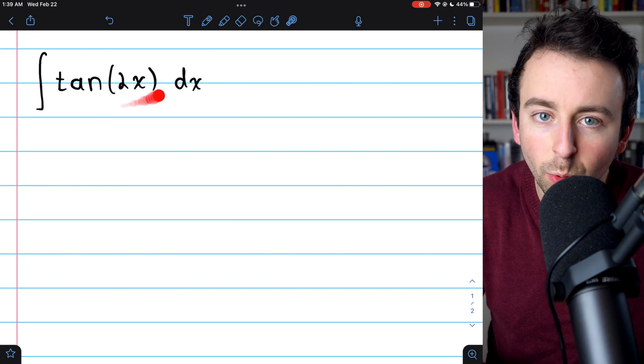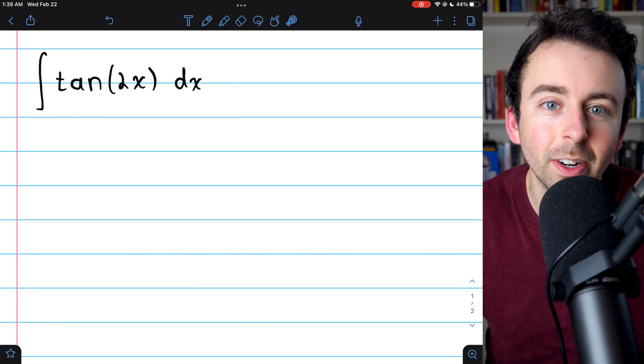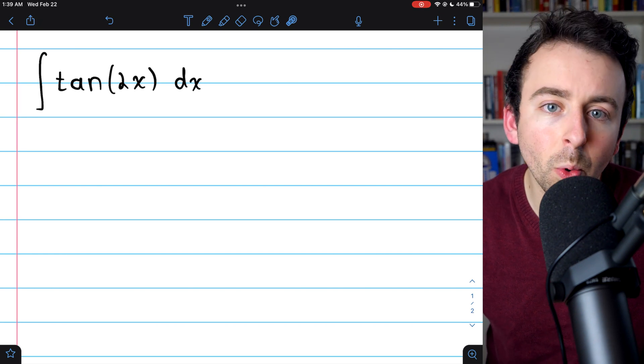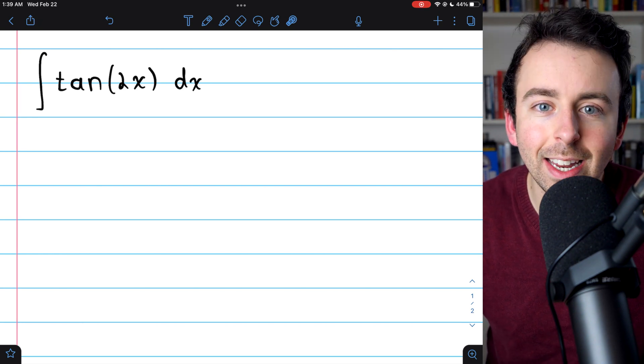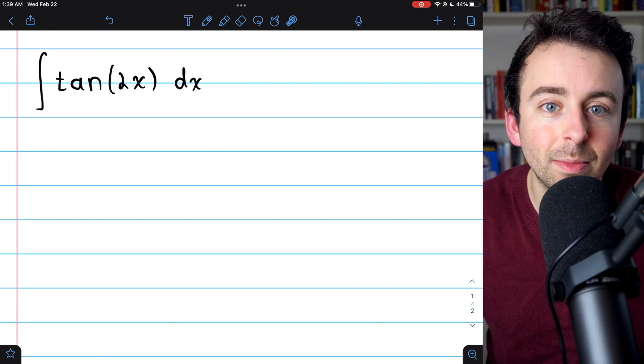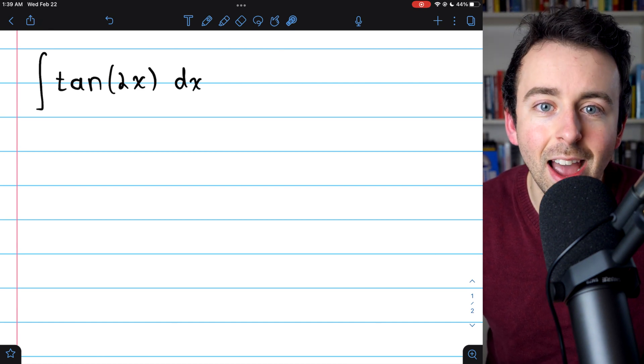Then you can try this one, which is super similar. It's just another u-sub problem, and that becomes more evident when we rewrite tangent in terms of sines and cosines. Recall that tangent is equal to sine over cosine.